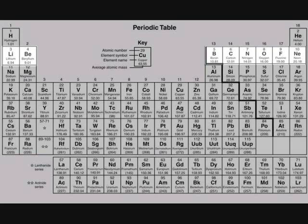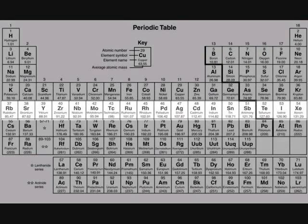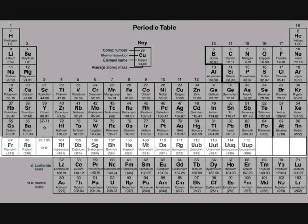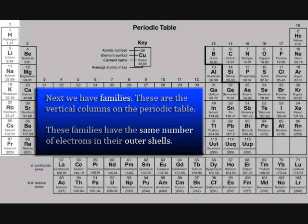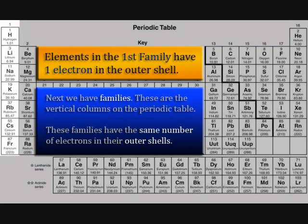This pattern continues in periods 3, 4, 5, 6, and finally 7. Next, we come to the columns. These columns are called families. These families share the same number of electrons in the outer shell. These electrons determine how reactive or how happy each element is. These electrons in the outer shell are called valence electrons.